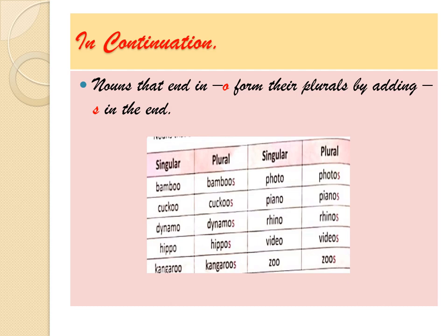Rule five: nouns that end in O form their plural by adding S at the end. Words ending in O form their plural by adding S. Like: bamboo/bamboos, cuckoo/cuckoos, dynamo/dynamos, hippo/hippos, kangaroo/kangaroos, rhino/rhinos, video/videos, zoo/zoos. So words ending in O — when we change that word into plural, we add S.